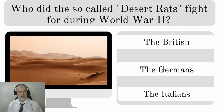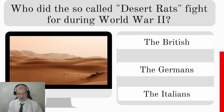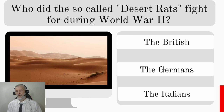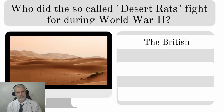Who did the so-called Desert Rats fight for during World War 2 — the British, Germans, or Italians? They fought for the British, and they were the 7th Armoured Division of the British Army.